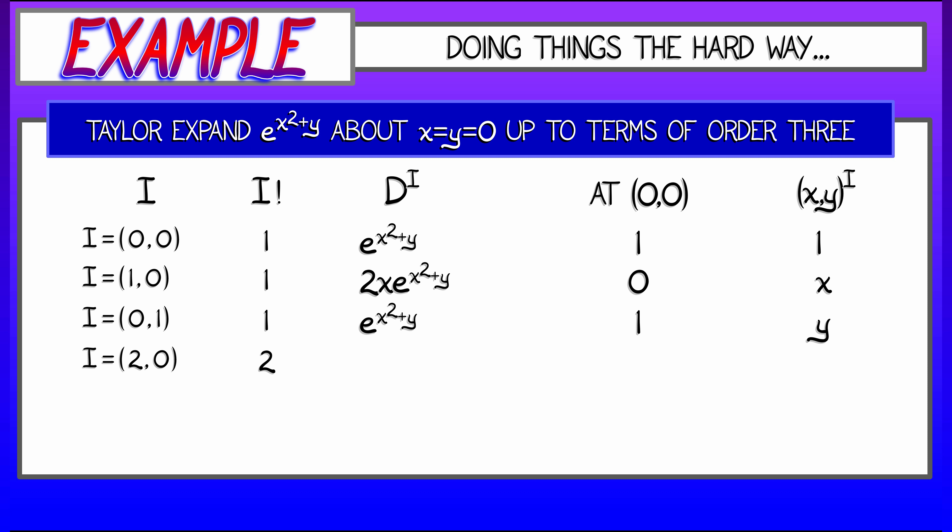For the second order terms, now I need to make sure I divide by one half out in front. Oh man, I need to take the second partial with respect to x. That means applying the product rule. I get 4x squared times e to the x squared plus y plus 2 times e to the x squared plus y. Evaluate it at the origin, get 2, multiply by x squared. Okay, I'm getting tired.